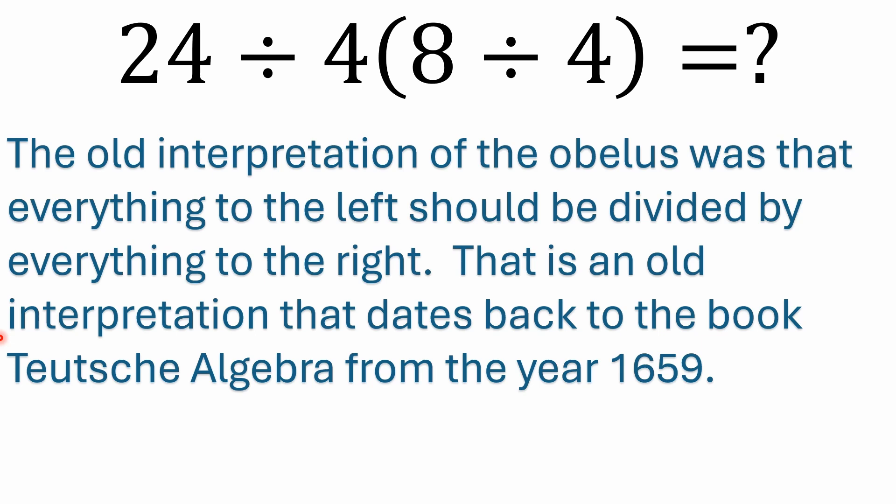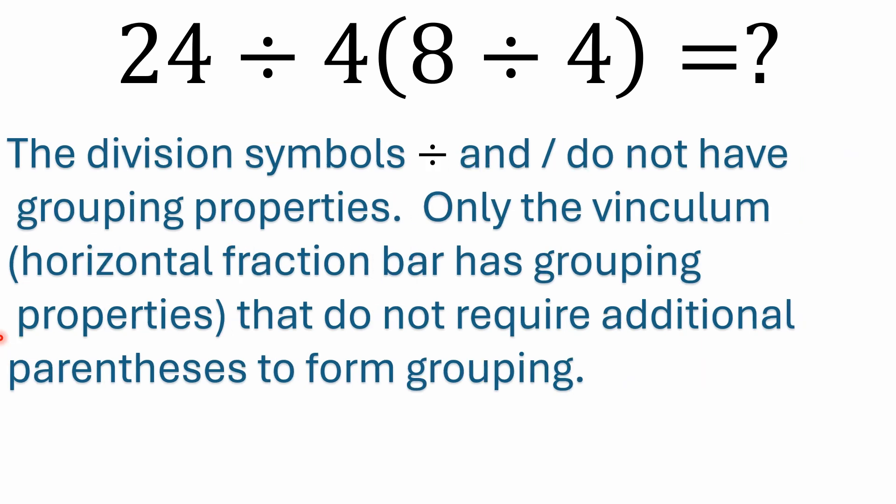You'd be better off using the vinculum, which is a horizontal fraction bar. That does have grouping properties because you can easily write in the numbers above or below the line. And again, I just mentioned that the division symbols of the obelus, which is the line with the dot above and dot below, and the forward slash or the solidus do not have grouping properties. Only the vinculum has grouping properties that do not require additional parentheses.